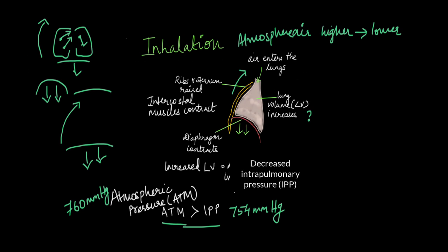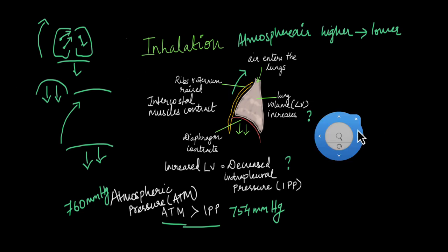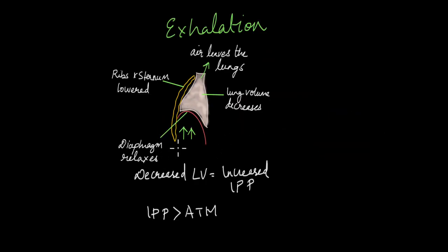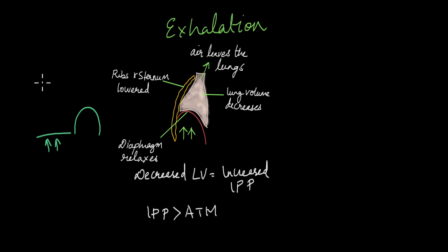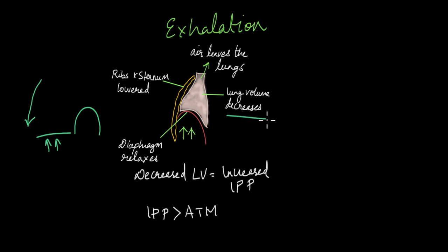Exhalation is the exact opposite. During exhalation, the diaphragm relaxes and moves up, becoming more dome-shaped again. At the same time, the intercostal muscles relax, causing the ribs and sternum to be pulled down from their raised position. As the diaphragm rises and the ribs and sternum lower, the lung volume decreases.